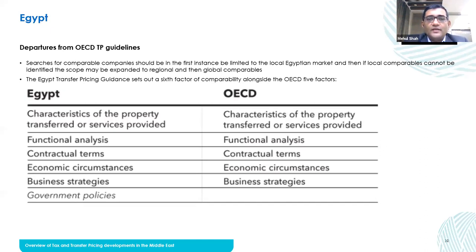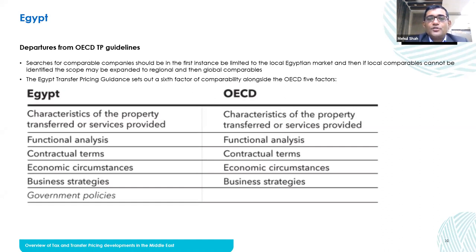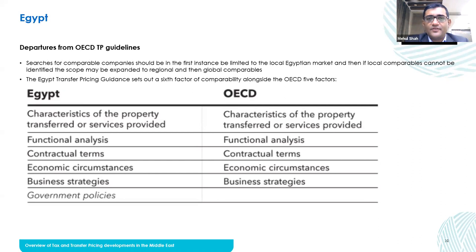Here are the departures we have seen from the broad TP guidelines. Two countries show departures: Egypt and KSA. In terms of comparability analysis where we try finding comparable companies, the Egyptian authorities say their first preference is for local Egyptian companies only. This is something we have seen in some other jurisdictions as well — even in India, while it is not mentioned in the law, when we interact with Indian transfer pricing authorities, they have a very strong preference for local comparables.